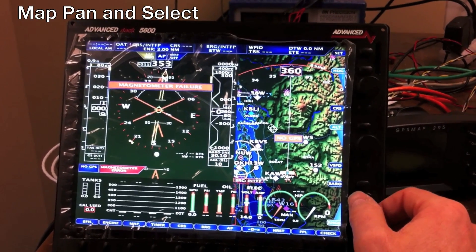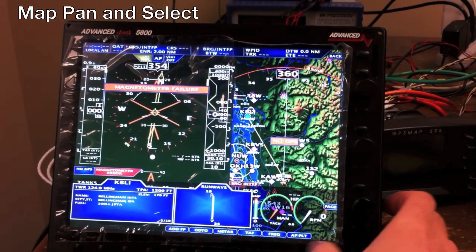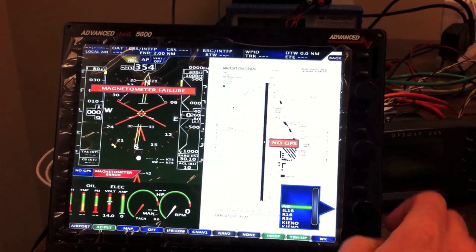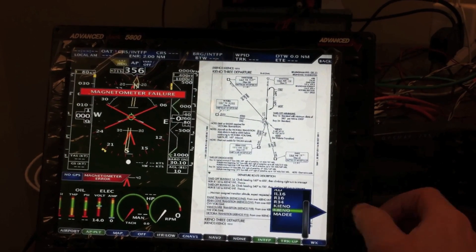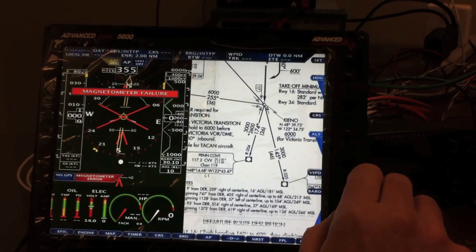Alright, let's pan up to here. Hit approach plate. Here we can list them. Enter. Now you can zoom and you can pan.